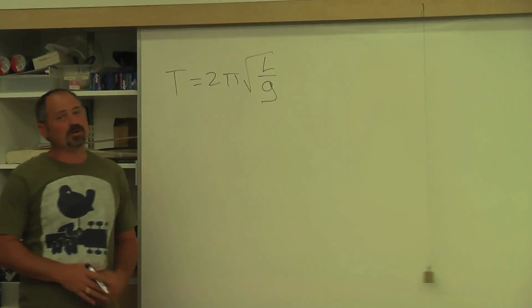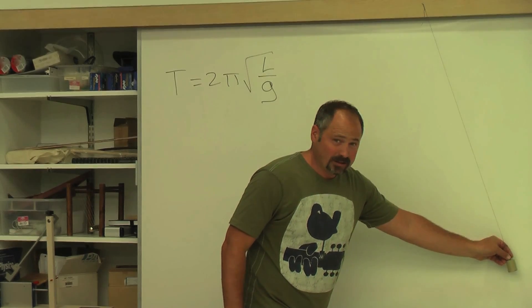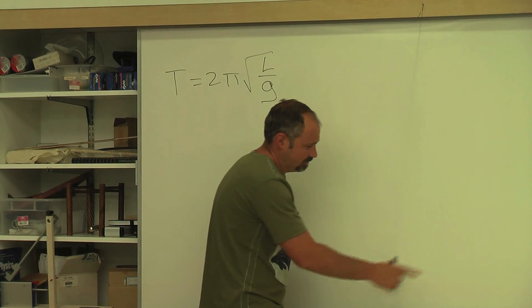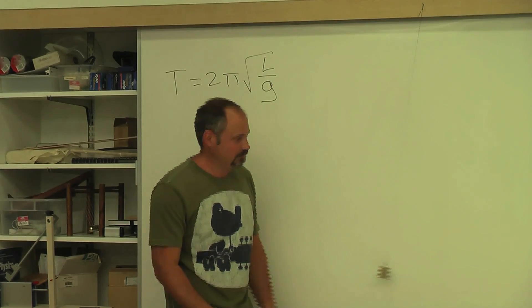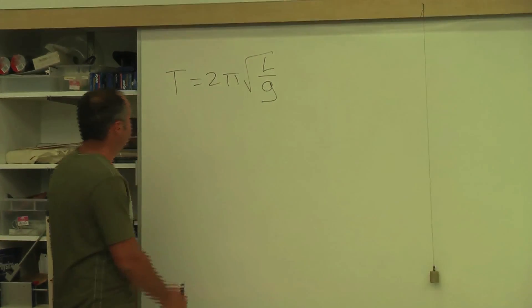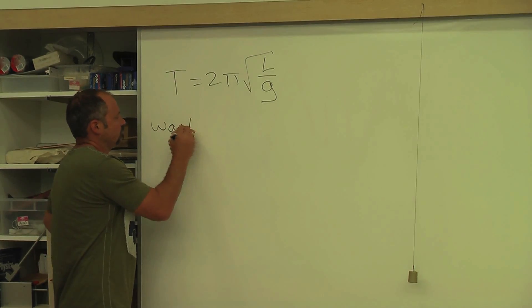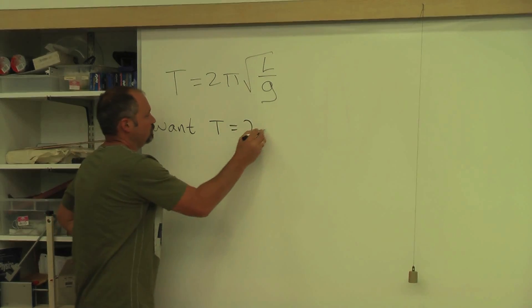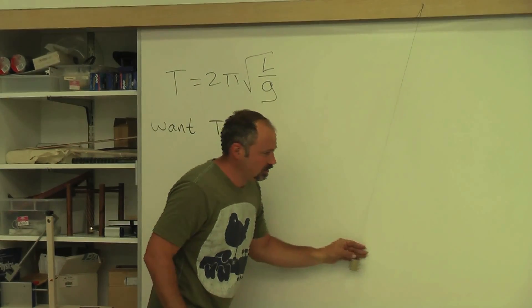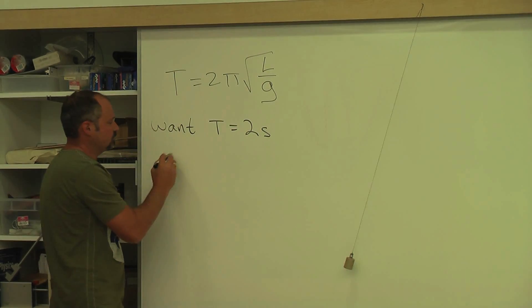Now, let's say, for example, you want to make a grandfather clock. And you want this period to be worth two seconds. So tick, tock, tick, tock, each swing is a second. And we can find the length that you need by using this formula. Well, if we want the period to be equal to two seconds, and therefore each half cycle is one tick of the clock, we plug this in here.